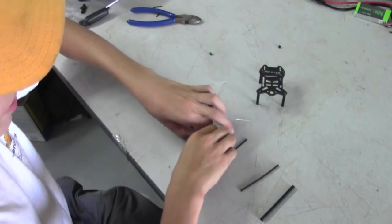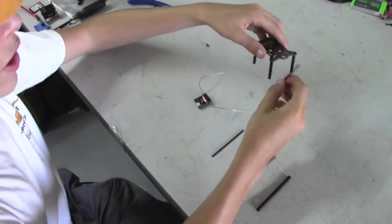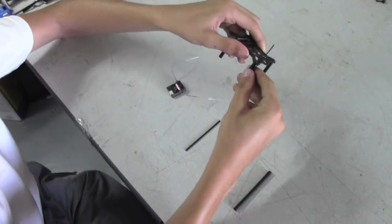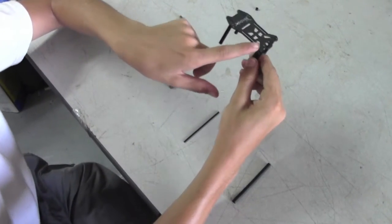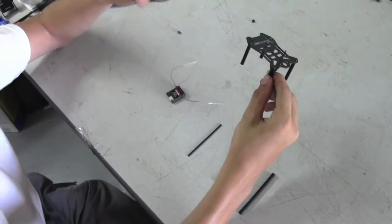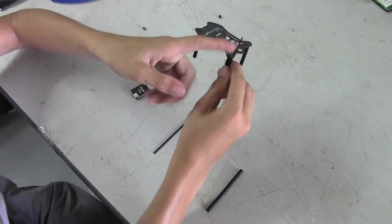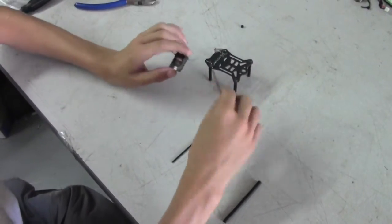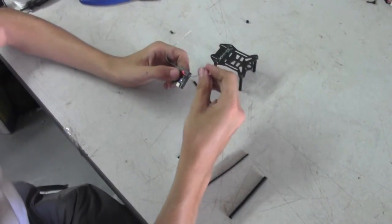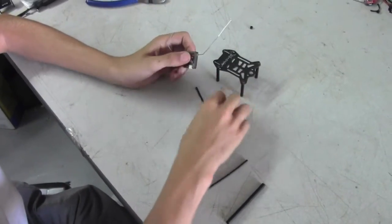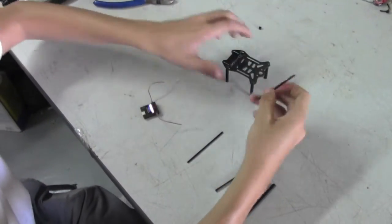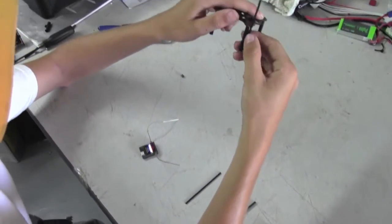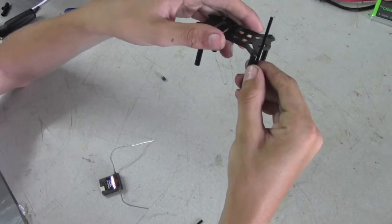The next thing we're going to do is we're going to take our standoffs, and we're going to measure how long we need our zip tie to be. Generally, I like to keep the zip tie just slightly above where the standoff would be, and that's so your actual receiver wire itself will be mounted to this, and it's actually mounted above the frame.